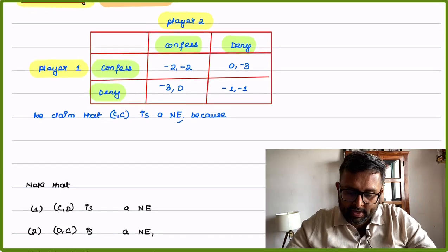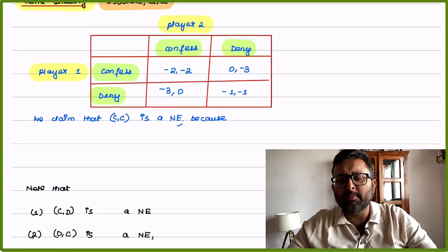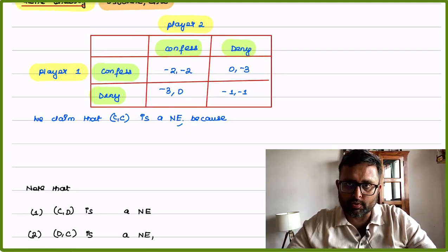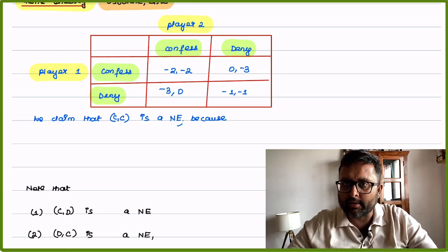We have player 1 and player 2. Player 1 is prisoner 1, player 2 is prisoner 2. Both players have two choices: they can either confess to their crime or they can deny the crime.